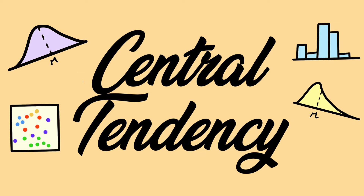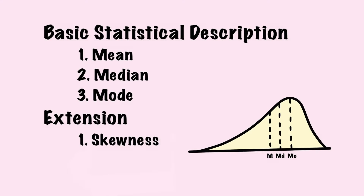Hey guys, today's video is about central tendency. We'll start by looking at three basic statistical descriptions: mean, median, and mode. All these properties are used to measure the center of data. Then we'll introduce how these properties link to skewness.